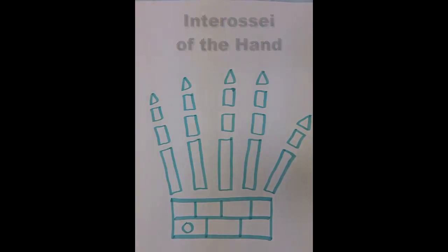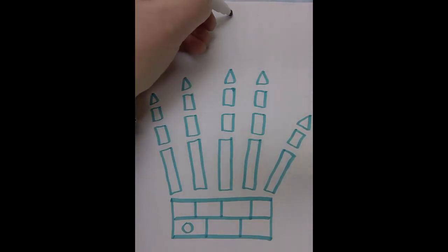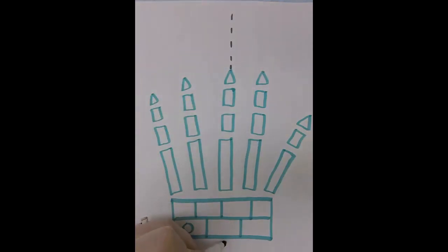This video is called the interossei of the hand. We're starting out with a diagram of the right hand at palmar view. We're going to start by adding in the midline of the hand which should pass right through the middle finger. When we're talking about abduction and adduction of the digits, it's always with reference to this midline.